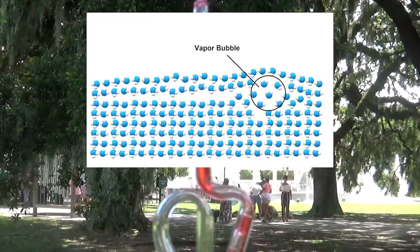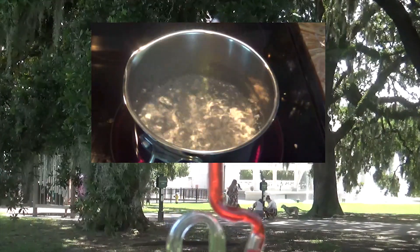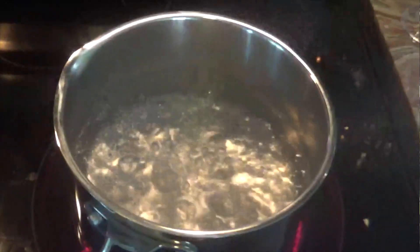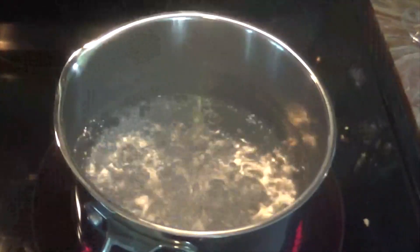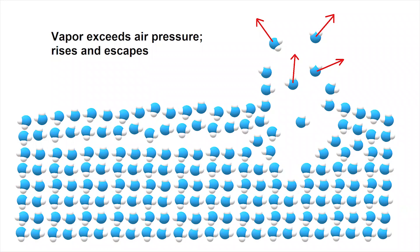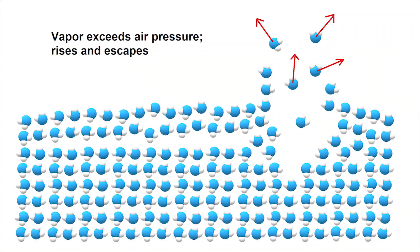They're separated molecules of H2O that are under pressure inside the water, so they stay contained within the bubbles. But once the pressure of the vapor overcomes the pressure of the air above the liquid, the bubbles will start to rise and boil out the top. That right there is what boiling is — getting those trapped bubbles of vapor to overcome the air pressure above the liquid so they can rise up and come out the top.